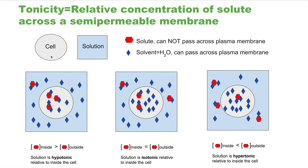The semipermeable membrane relevant to us is the cell membrane. The cell is shown as a round structure surrounded by its membrane. The solute cannot pass across the plasma membrane, but the solvent — water — can. We care about solute concentration in two different places: inside the cell and outside the cell in the bodily fluid.